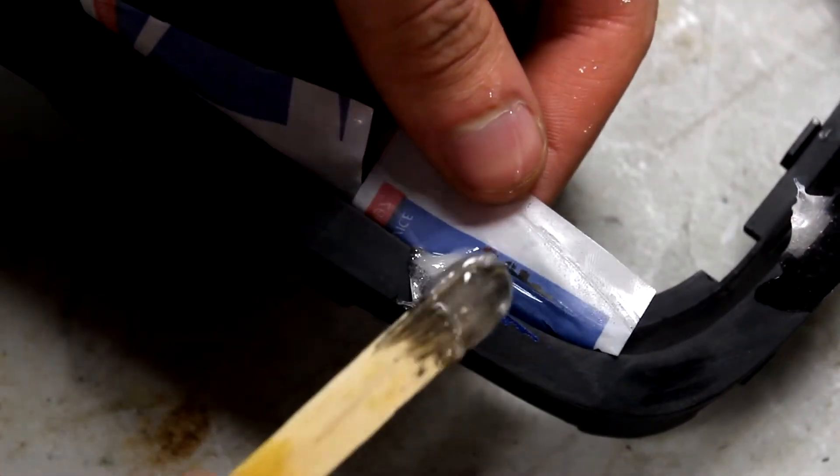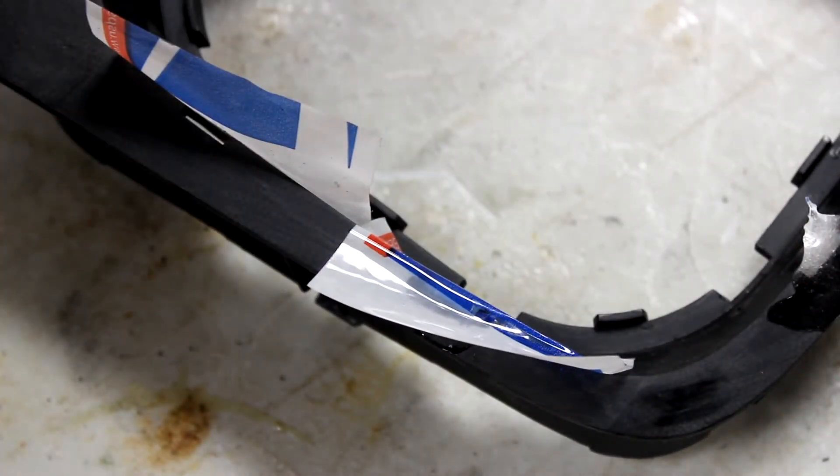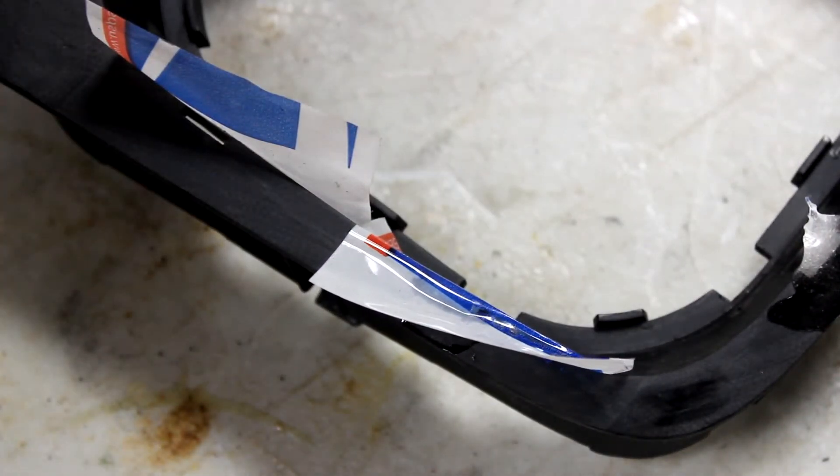Once that's all set, you could fill any scratches or holes in your trim. To do this, I used epoxy. Once I made sure that the epoxy was thoroughly mixed, I applied a generous amount into the holes in the trim.